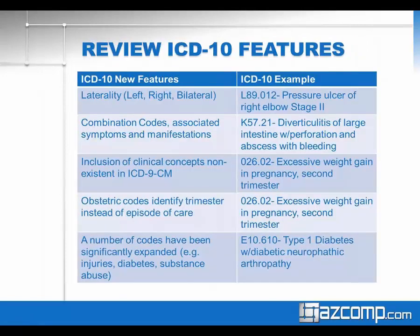Looking back at ICD-10 features from the first webinar, it's easy to see why the code set is expanding so drastically. In some scenarios it might be easy to find a one-to-one or one-to-multiple match — like laterality, where one code now describes left, right, or bilateral. But there are new scenarios specific to ICD-10, such as combination codes, where we associate symptoms and manifestations to diseases. What used to be multiple codes in ICD-9 is now just one code in ICD-10.